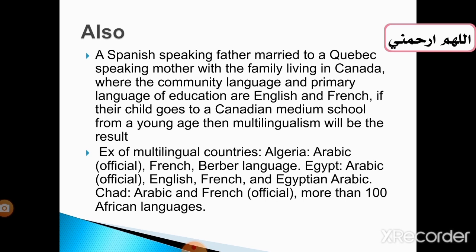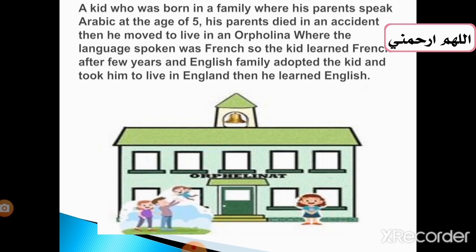Here we have some multilingual countries: Algeria has Arabic as an official language, along with French and Berber; Egypt has Arabic as an official language, along with English and French; Chad has Arabic and French as official languages and more than 100 African languages. We also deal with a last example: a kid who was born in a family where his parents speak Arabic — at the age of five his parents died in an accident, then he moved to live in an orphanage where the language spoken was French, so the kid learned French. After a few years, an English family adopted the kid and took him to live in England.